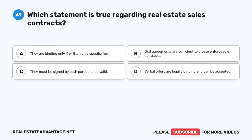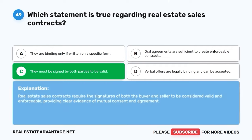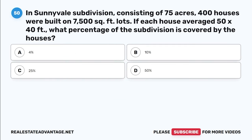Question 49. Which statement is true regarding real estate sales contracts? A. They are binding only if written on a specific form. B. Oral agreements are sufficient to create enforceable contracts. C. They must be signed by both parties to be valid. D. Verbal offers are legally binding and can be accepted. The correct answer is C: They must be signed by both parties to be valid. Real estate sales contracts require the signatures of both the buyer and seller to be considered valid and enforceable, providing clear evidence of mutual consent and agreement.